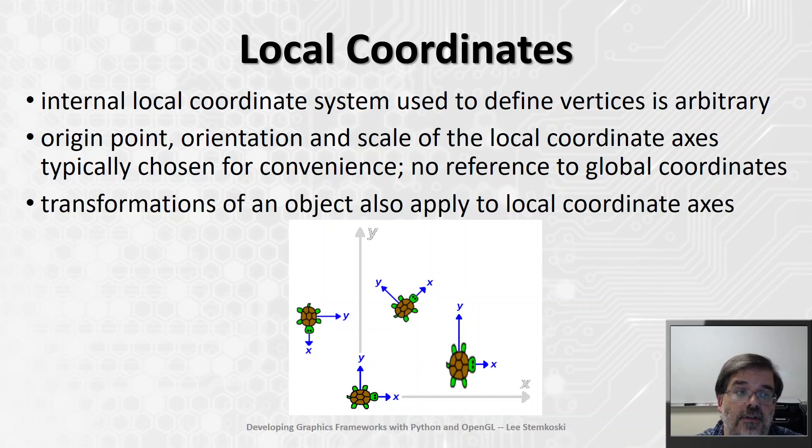So the internal, or local coordinate system, which we use to define any of these objects, is kind of arbitrary. The origin and the orientation and scale of these local coordinate axes are chosen for convenience and have nothing to do with a global coordinate system.